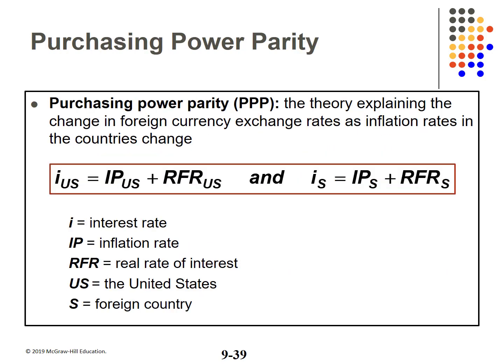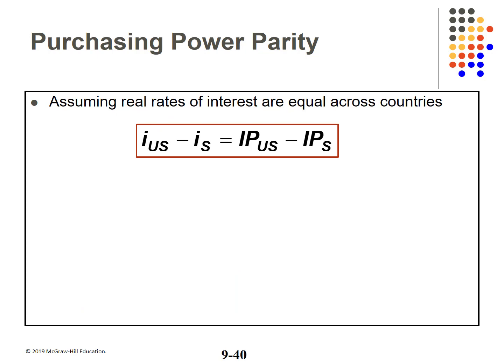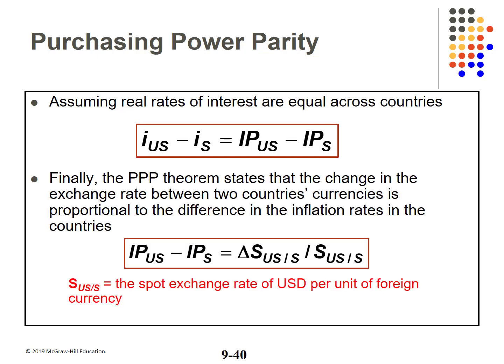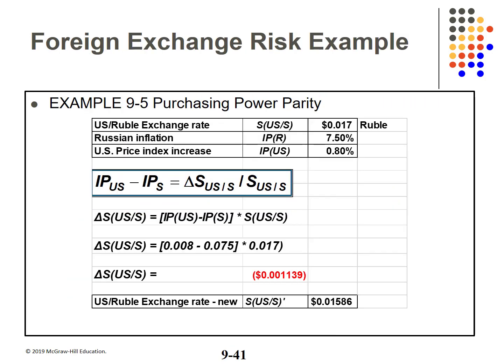The purchasing power parity theory states that changes in foreign exchange rates are related to inflation rates in each country. Assuming interest rates are equal, the difference between the interest rate in the US and the foreign rate should equal the difference in inflation in the two countries — the change in exchange rate is proportional to the difference in inflation rates. Example 9.5: US dollar to the ruble is 1.7 cents; Russian inflation is 7.5%; US inflation is 0.8%. Using the formula, the change should equal 0.001139, yielding a revised exchange rate of $0.01586.